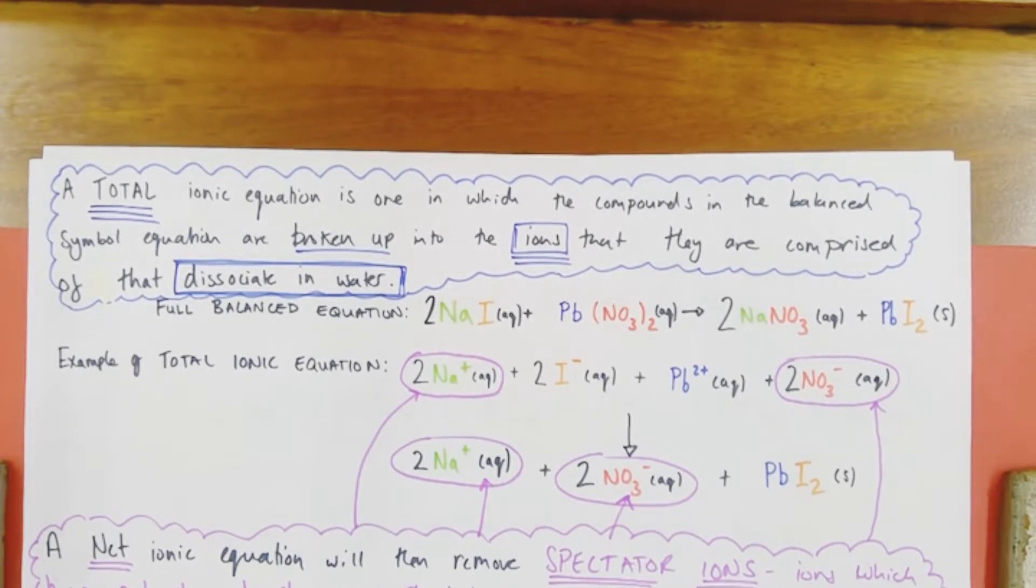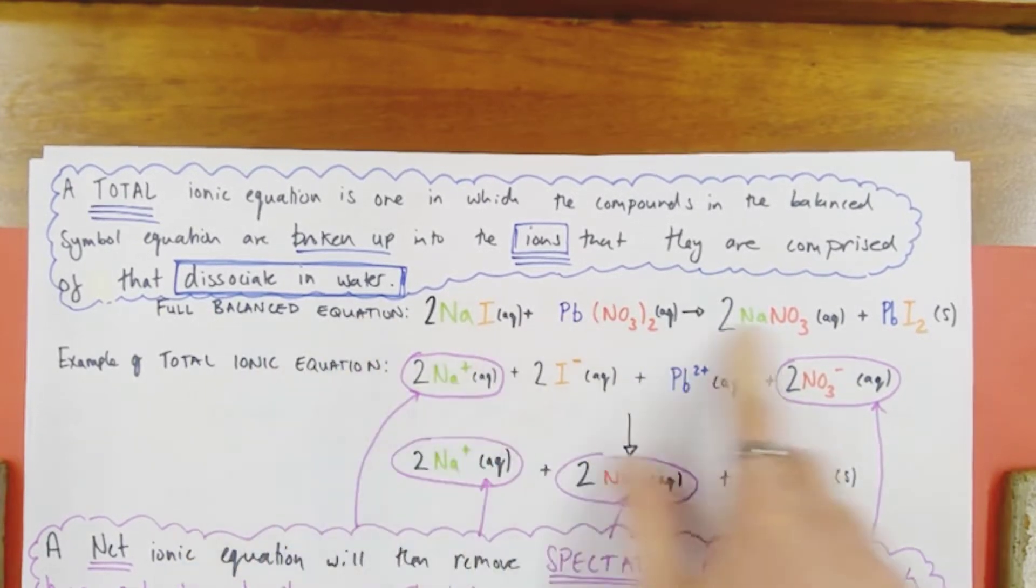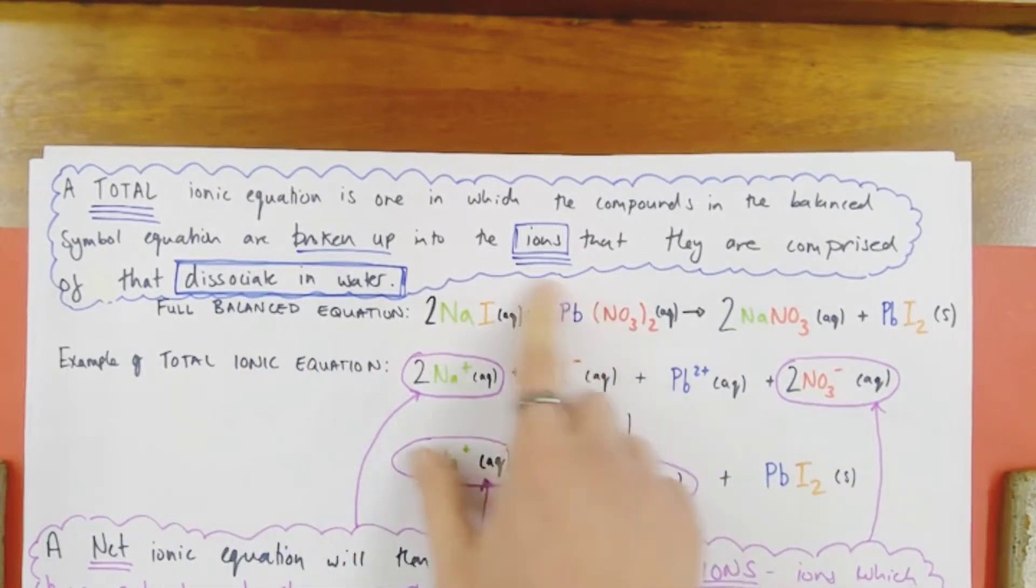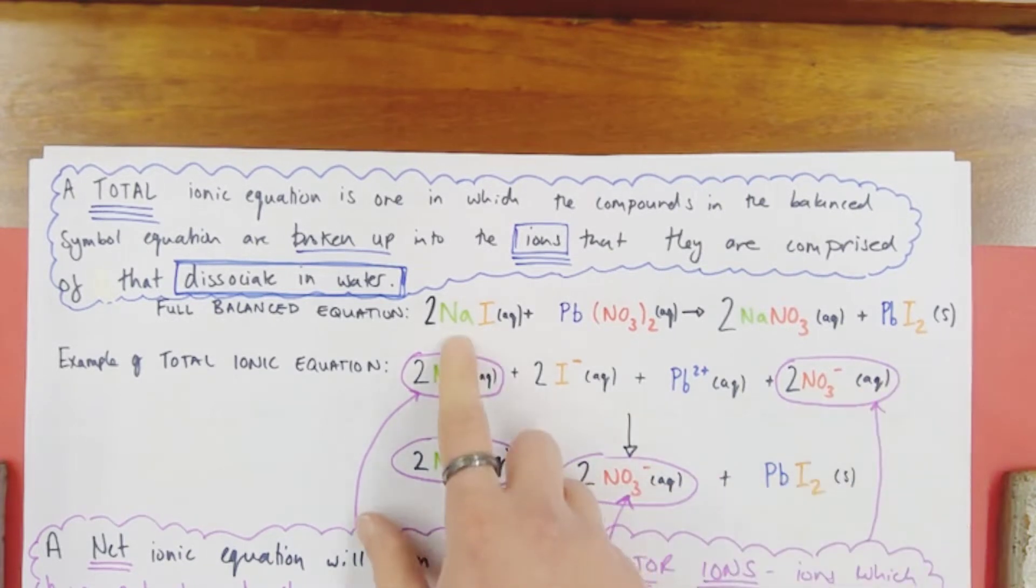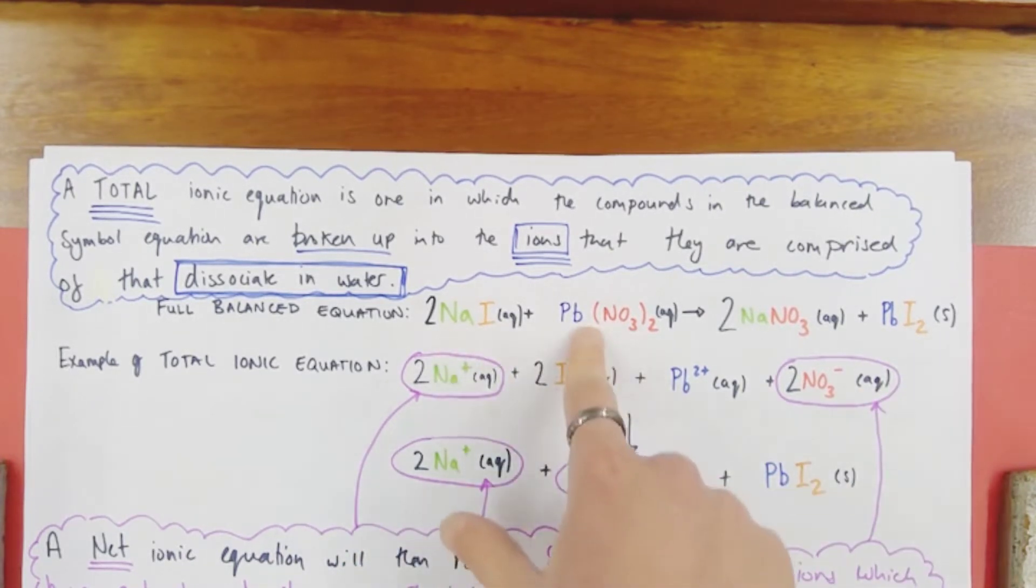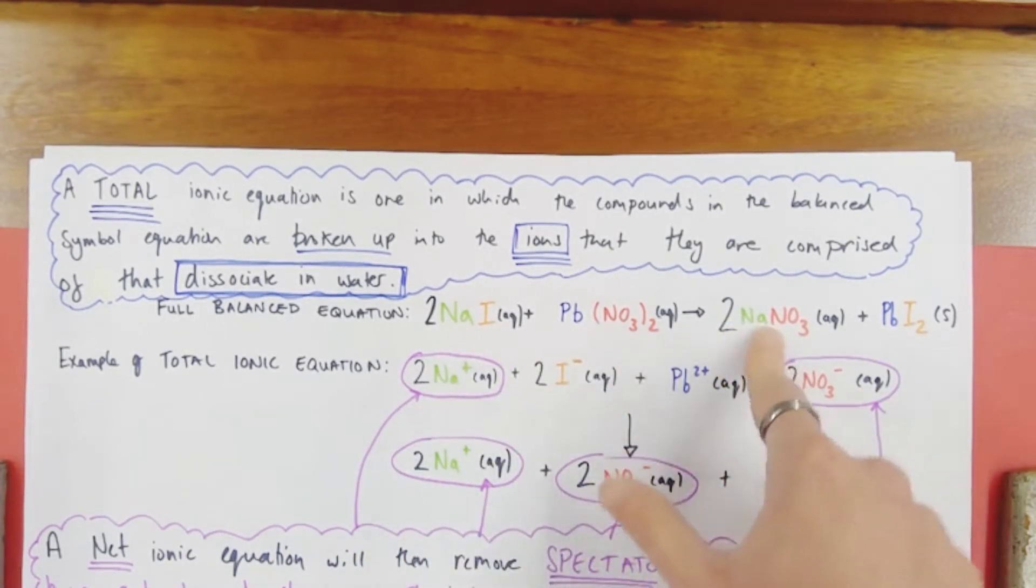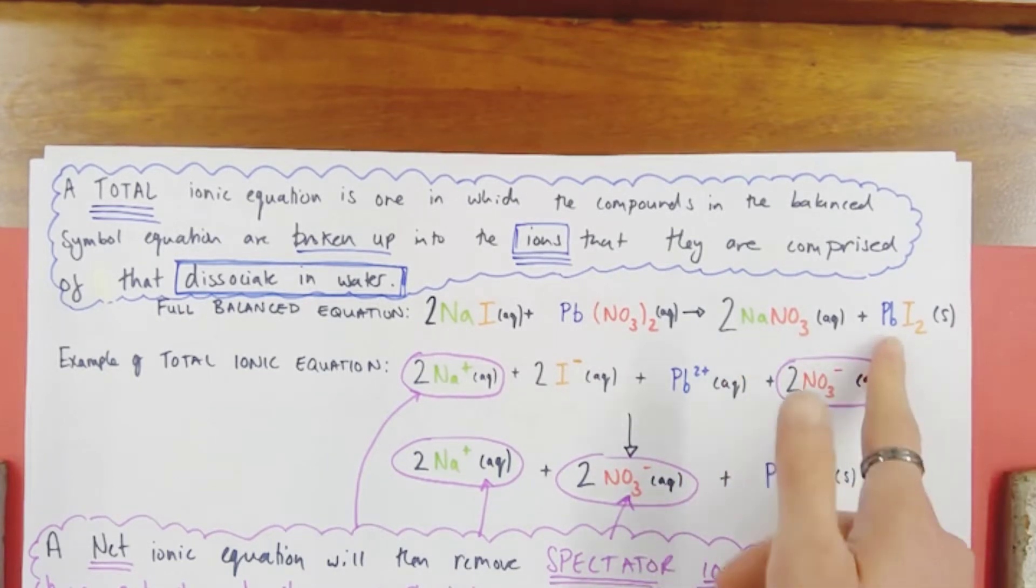So we're talking about soluble ionic compounds here. So here is an example. We've got a fully balanced equation for a precipitation reaction. I've got sodium iodide solution reacting with lead nitrate solution to form sodium nitrate in solution and lead iodide solid, so a precipitate of lead iodide.